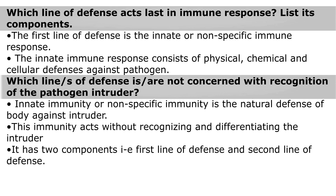Which line of defense is not concerned with recognition of the pathogen intruder? Innate immunity, or nonspecific immunity, is the natural defense of the body against intruders. This immunity acts without recognizing and differentiating the intruder. It has two components: the first line of defense and the second line of defense.